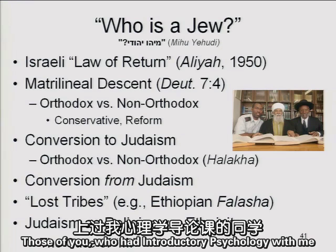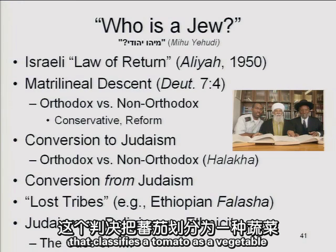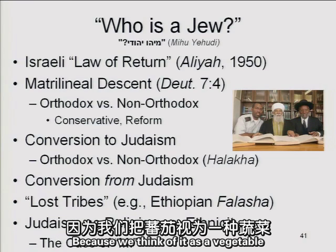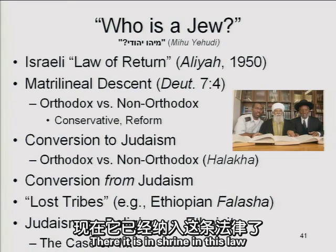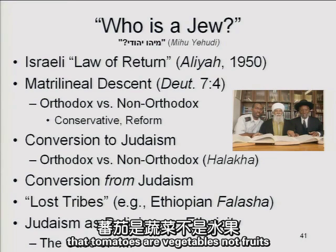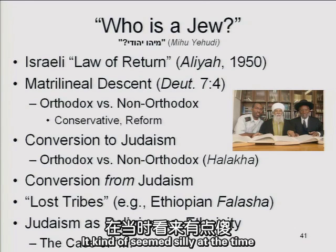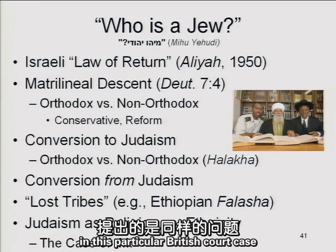Those of you who had introductory psychology with me know that there's a famous American Supreme Court decision that classifies a tomato as a vegetable — because we think of it as a vegetable even though botanically it's not. The Supreme Court decision from the 1880s enshrined that tomatoes are vegetables, not fruits. It kind of seems silly, but it's the same kind of question being raised in this particular British court case.